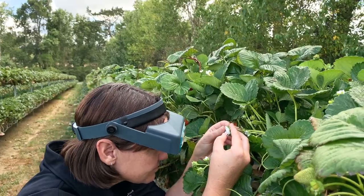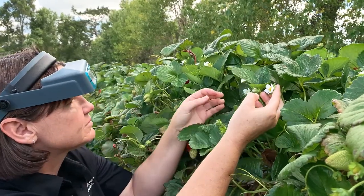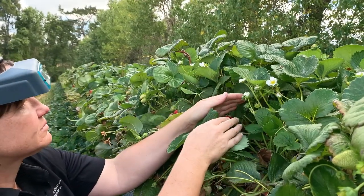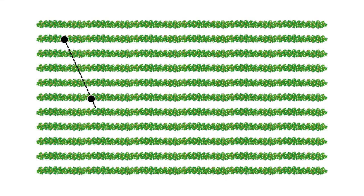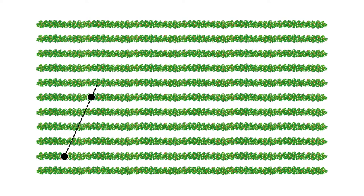There are a few different designs you can use, but our preferred basic design is to scout in a W or M pattern. Sample points are not located on the edge rows or within four to five metres of the row end in order to avoid edge effects. This design gives a minimum of 10 sampling points and good coverage of the block.